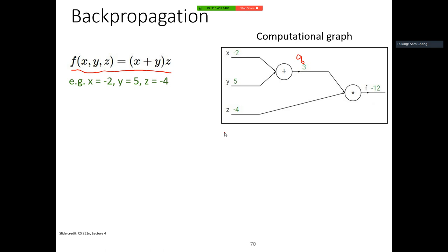I have x, y, z as values. I can draw this computational graph in two steps: I first compute x + y to get intermediate value q, then f = q * z. I want to find the gradient — really the vector of partial derivatives of the final function with respect to all variables: partial x, partial y, partial z.